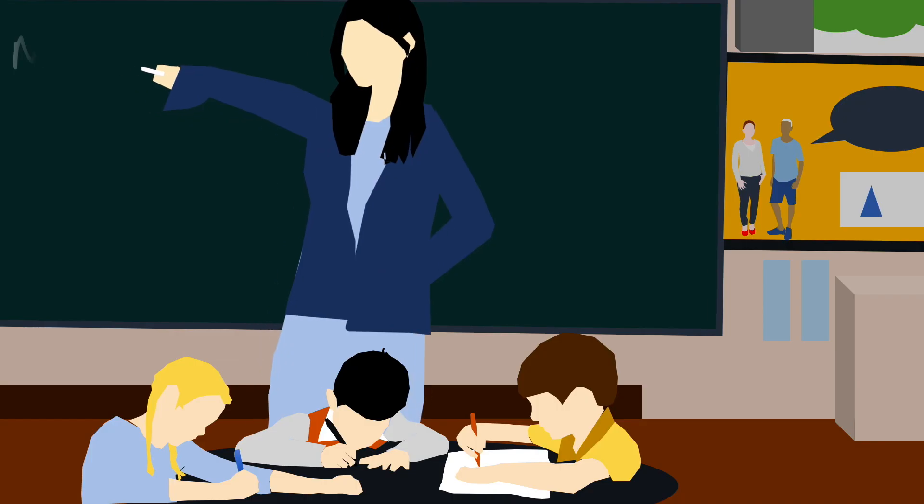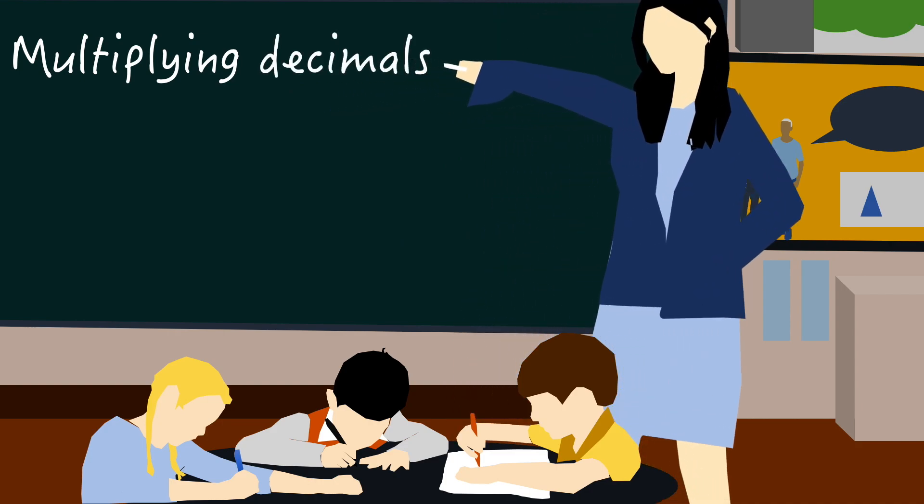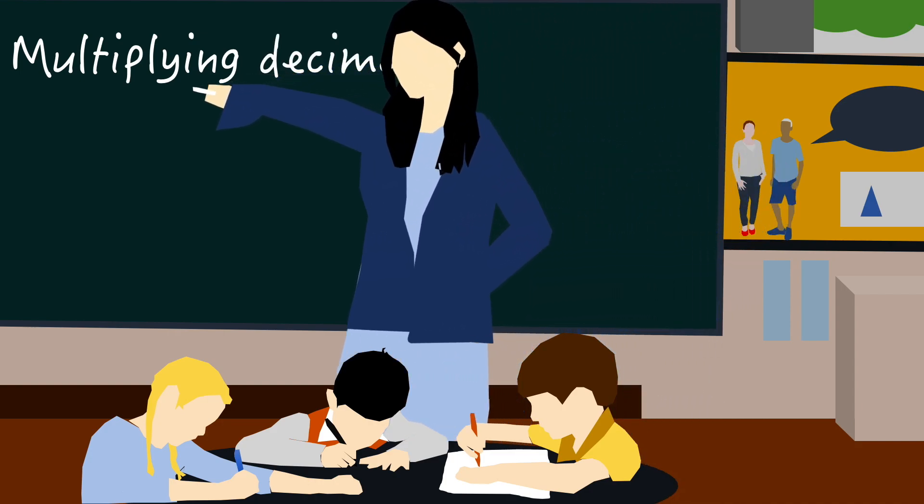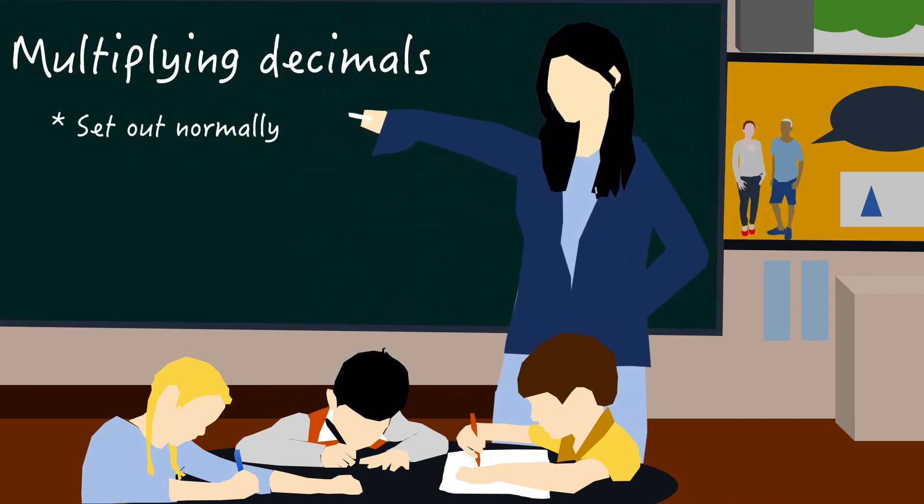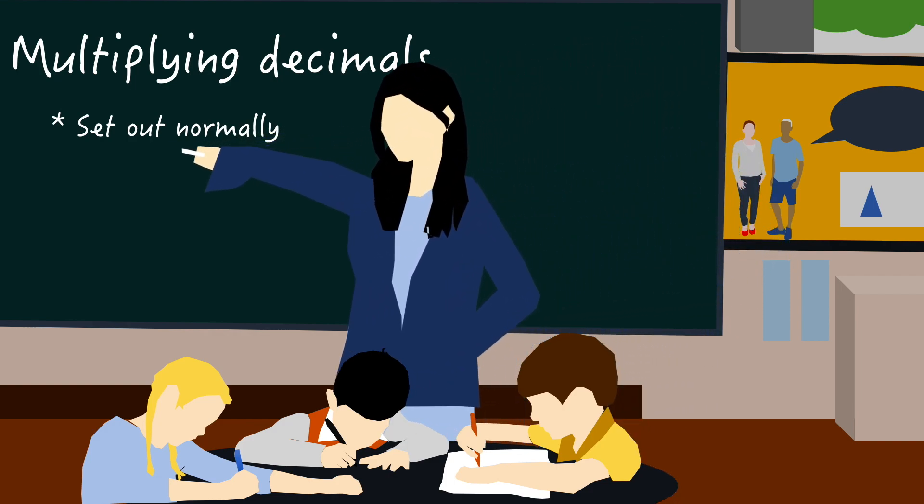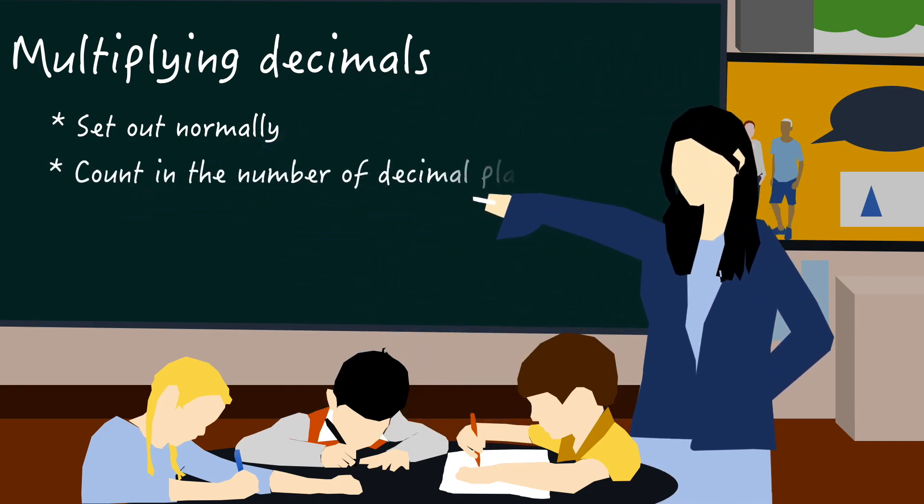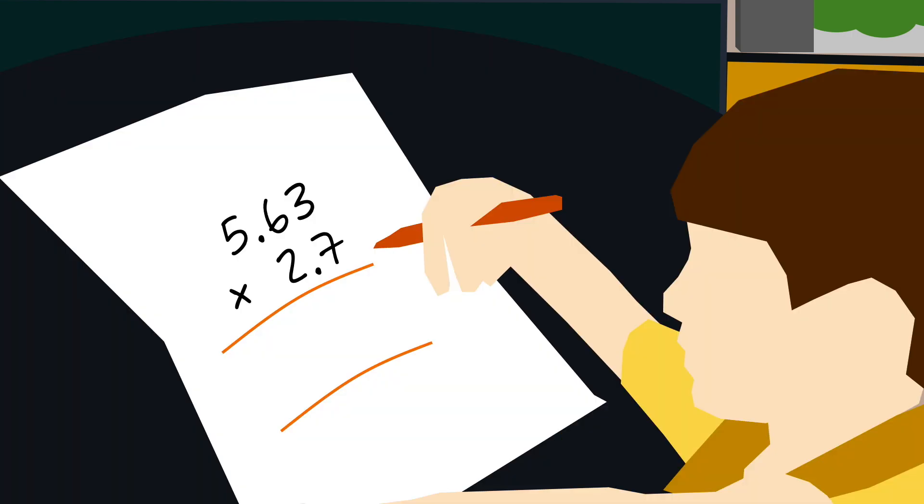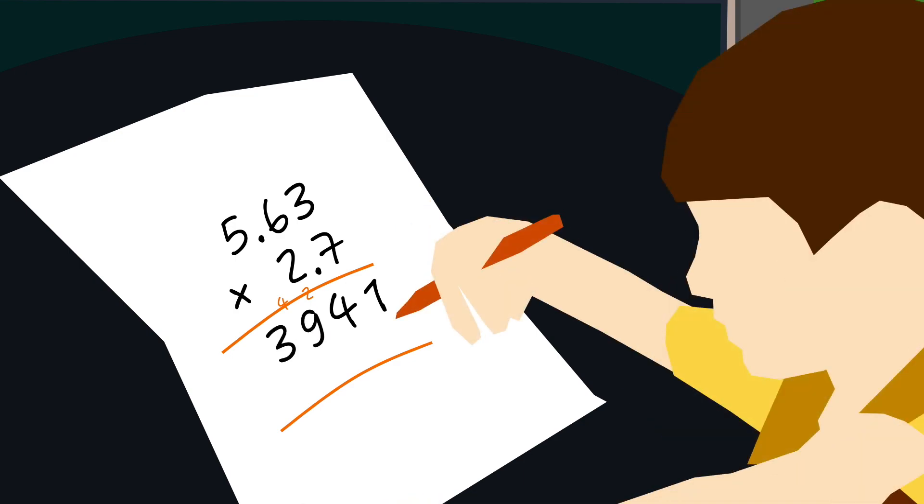I do remember, toward the end of primary school, being taught how to multiply decimals by hand. It went something like treat it like normal long multiplication, then count in the number of decimal places. This works, but no one ever explained to me what's going on, and looking back on it, it seems like making a mistake would be pretty easy to do.